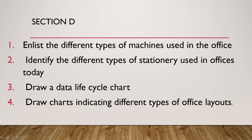Moving on to Section D — you have to answer one question, which is for six marks, based on skill development. List the different types of machines used in the office; identify the different types of stationery used in offices today; draw a data life cycle chart; draw charts indicating different types of office layout. You can definitely prepare well for the examination if you thoroughly understand the chapters and the most likely questions.